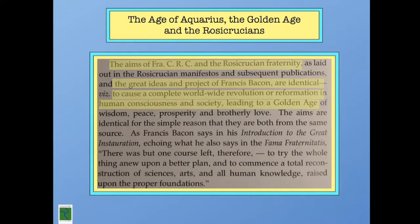Here's a quote from a book written by Peter Dawkins, the president of the Francis Bacon Research Trust. He's very knowledgeable in Francis Bacon and Rosicrucianism. The quote says: the aims of Brother Christian Rosencruz and the Rosicrucian fraternity as laid out in the Rosicrucian manifestos and subsequent publications, and the great ideas and project of Francis Bacon, are identical to cause a complete worldwide revolution or reformation in human consciousness and society leading to a golden age. We want to begin this by stating that this Rosicrucian movement, which connects with John Dee and Francis Bacon, was very apocalyptic in nature, both in terms of the coming of the old age, but more focused upon creating the new age.